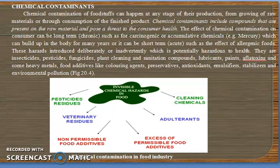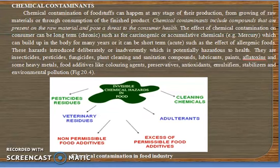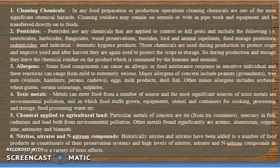This picture shows chemical contaminants in the food industry: pesticides, veterinary drugs, non-permissible food additives, excess of permissible food additives, cleaning chemicals, plant sanitation compounds, lubricants, paint, aflatoxins, heavy metals, food additives including coloring agents, preservatives, antioxidants, emulsifiers, stabilizers, and certain environmental pollutants. These are the invisible chemical hazards in food materials.